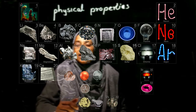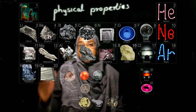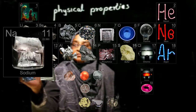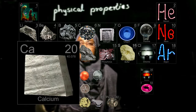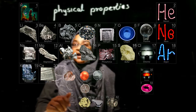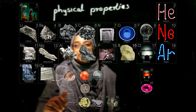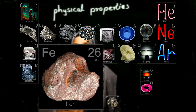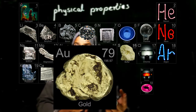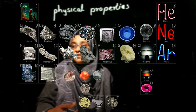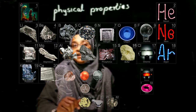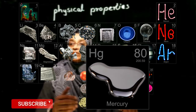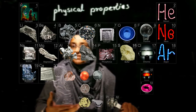Let us see how the physical state of these metals and non-metals differ. Lithium, beryllium, sodium, magnesium, aluminium, potassium, and calcium all exist in the solid state at room temperature. Other common metals like iron, copper, zinc, silver, and gold are also in the solid state. Only one metal exists in the liquid state at room temperature — that is mercury. No metal exists in the gaseous state at room temperature.